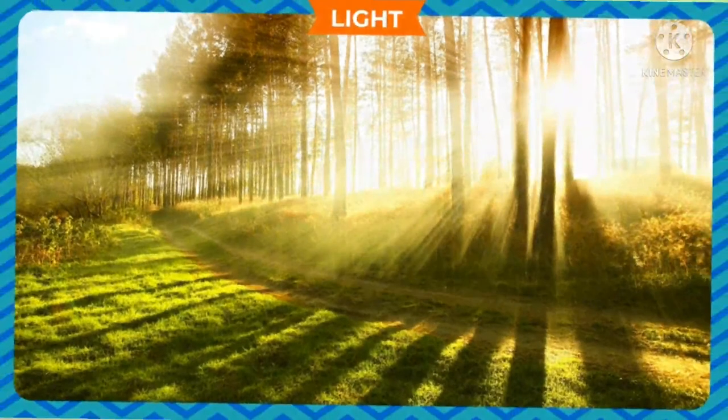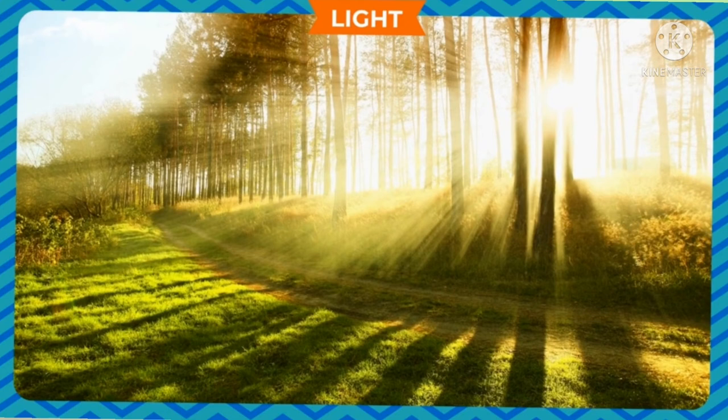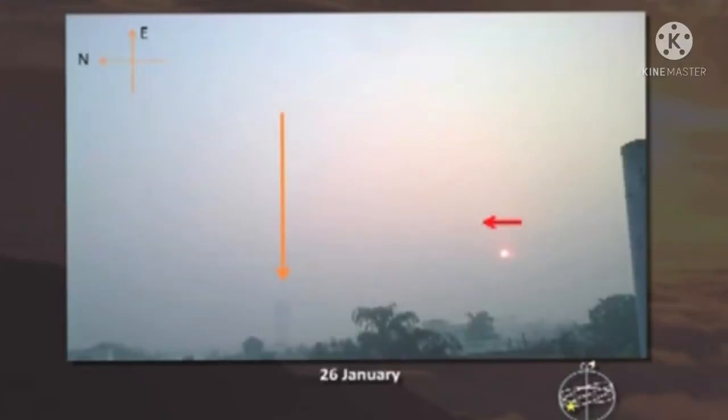Children, I think you understand very well about the north and south movements of the sun. When the sun looks like traveling towards the south direction, it is called Dakshinayanam. When it travels towards the north direction, it is called Uttarayanam.